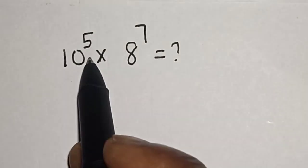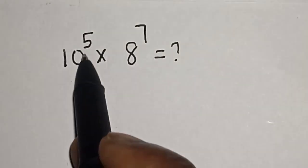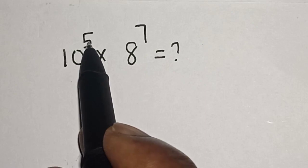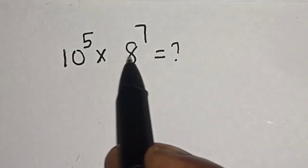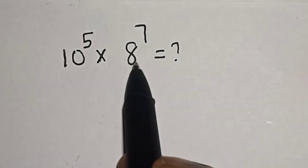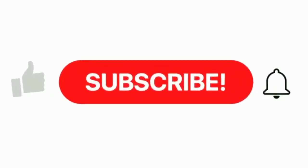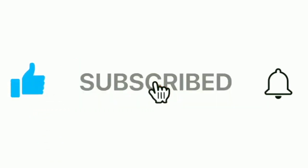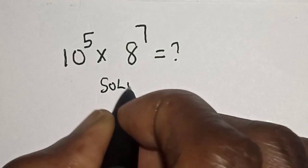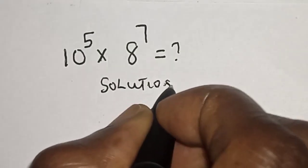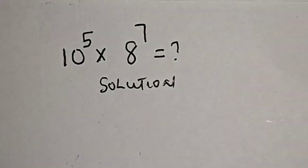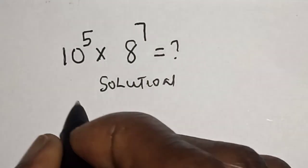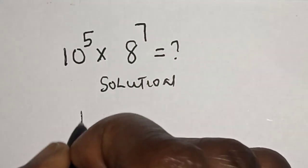Hello, welcome to Math Gist. In this class we want to evaluate this math problem: 10 raised to power 5 multiplied by 8 raised to power 7 is equal to what. Like, share, comment and subscribe. Solution: 10 raised to power 5 multiplied by 8 raised to power 7.